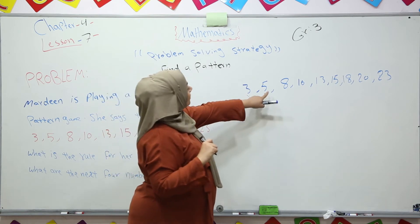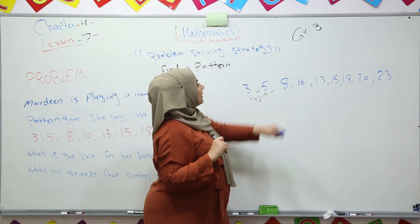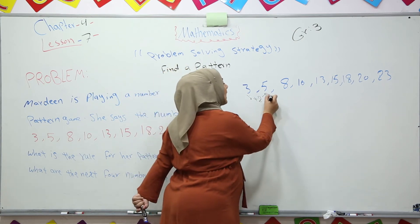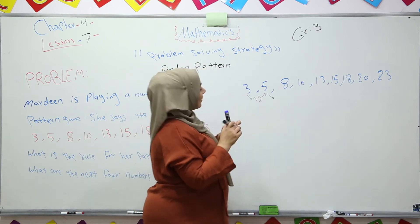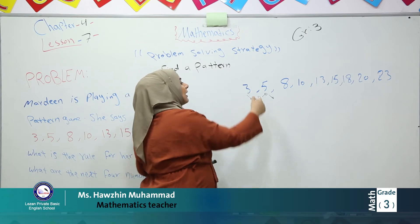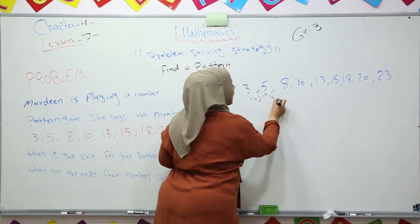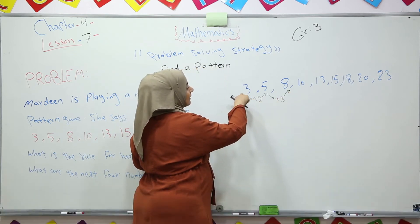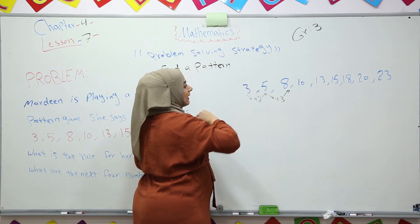Now it is 5 becomes 8. After 5, how many numbers do we have? We have 8. 5, 6, 7, 8. So if we add 3 numbers. 3 plus 2 is 5. 5 plus 3 is 8.